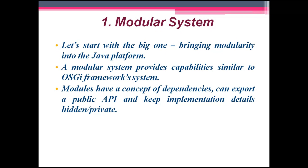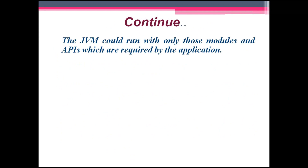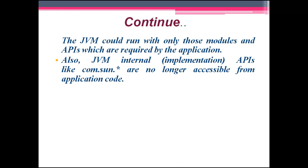One of the main motivations of the modular system is to provide a modular JVM which can run on devices with less available memory. The JVM could run with only those modules and APIs which are required by the application. Also, JVM internal implementation APIs like com.sun are no longer accessible from application code. It divides the application into small modules.